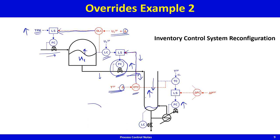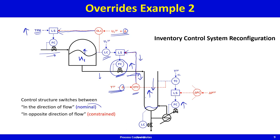Because level control has been lost and feed is still coming in, the level goes up. An override level controller detects this; when the level rises above its set point, that signal becomes the lowest and feed is cut to only as much as can be boiled off in the column. The control structure has switched — from the nominal blue loops (in the direction of flow) to the red loops (opposite direction) — governed by these overrides and carefully positioned low selector blocks.